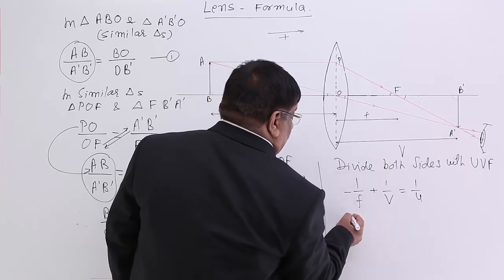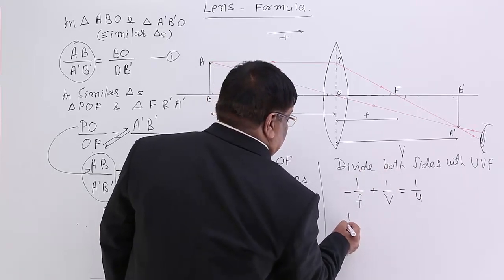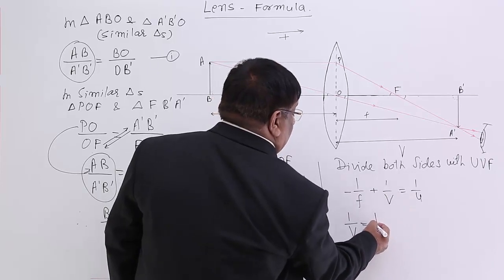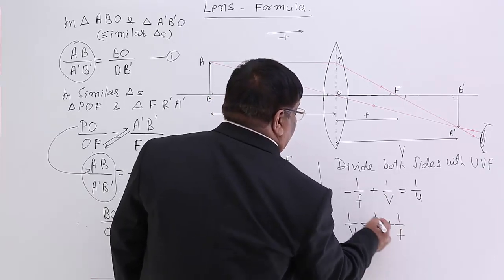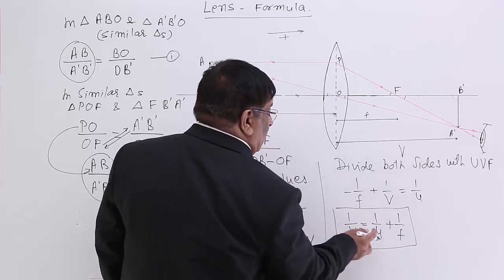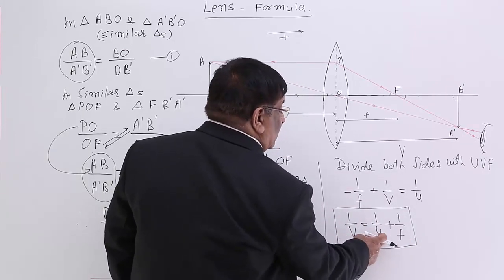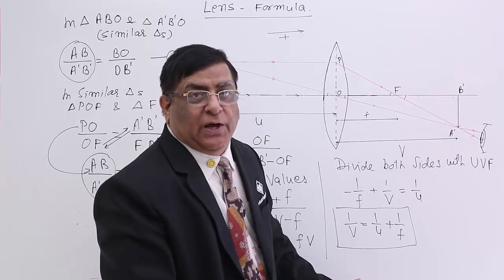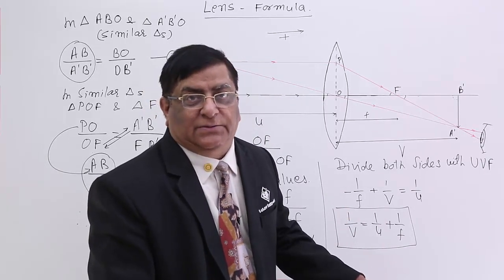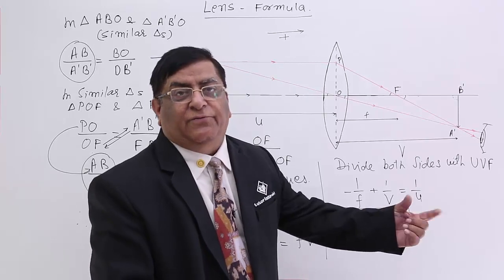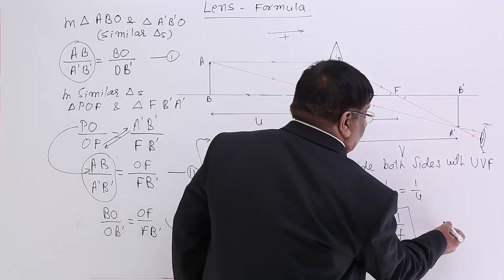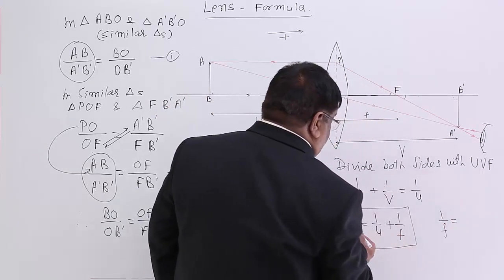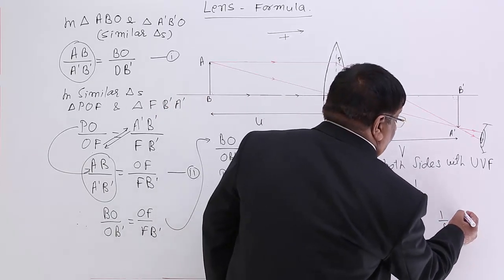After dividing by UVF, we get: 1/V = 1/U + 1/F. This gives us the value of V when U and F are known. Rearranging to find focal length: 1/F = 1/V − 1/U.